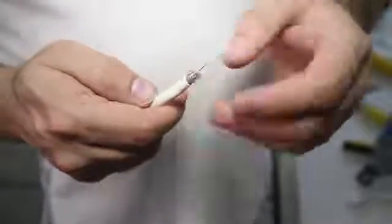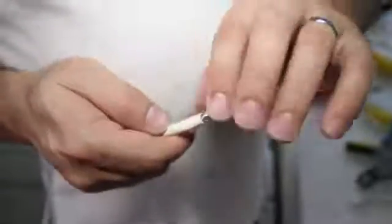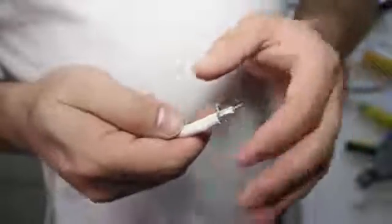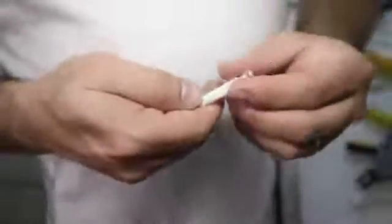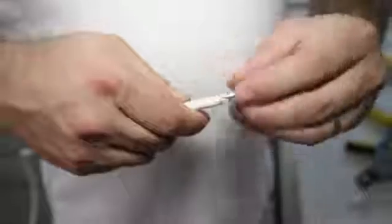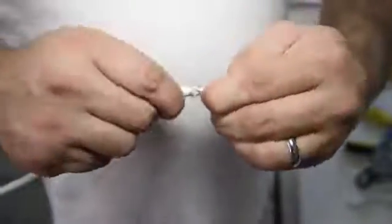We'll now bend the outer conductor braid back in the opposite direction so that it covers the very end of the wire jacket.